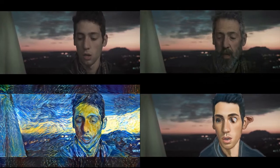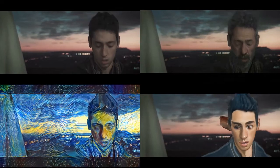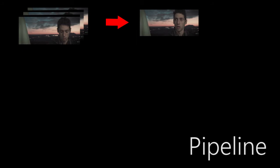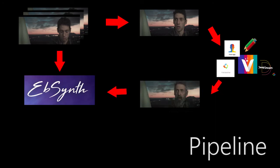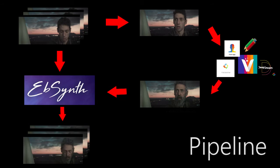Let's see the video pipeline transfer implemented. First of all, we get a video and we split it into multiple frames. We select one important frame and we apply to this frame some transformation — it can be AI, face morphing, cartoonizing, or even manual editing. Then we use a besynth to generate the resulting frames and merge them into a single video.